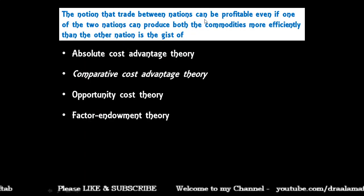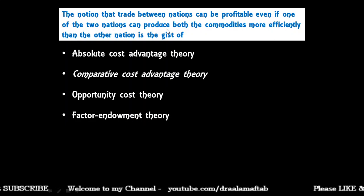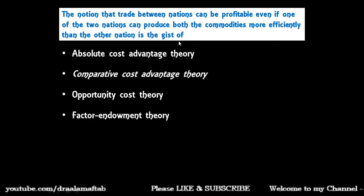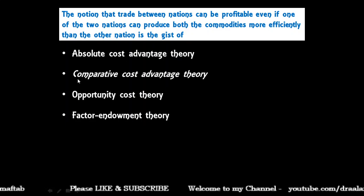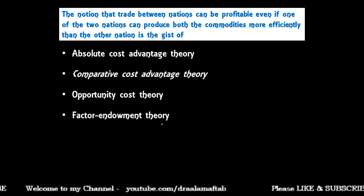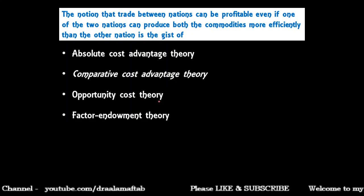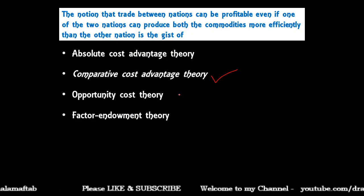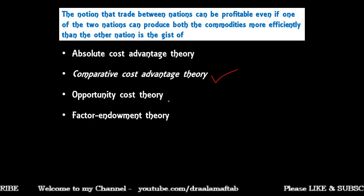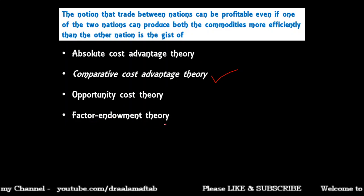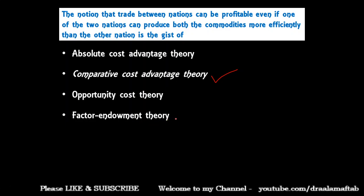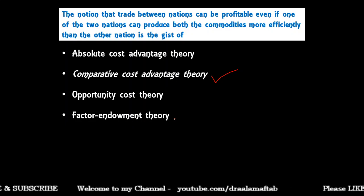Next question: the notion that trade between nations can be profitable even if one of the two nations can produce both commodities more efficiently than the other is the gist of — absolute cost advantage theory, comparative cost advantage theory, opportunity cost theory, or factor endowment theory. This principle is related to comparative cost advantage theory, given by Ricardo. The absolute advantage theory is given by Adam Smith, opportunity cost by Haberler, and factor endowment or Heckscher-Ohlin theory by Heckscher and Ohlin.